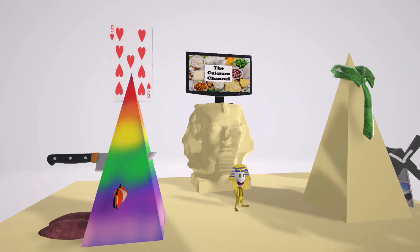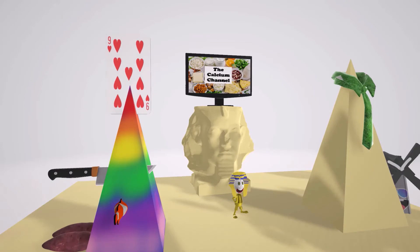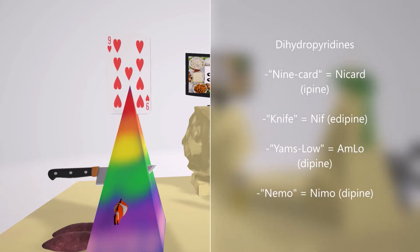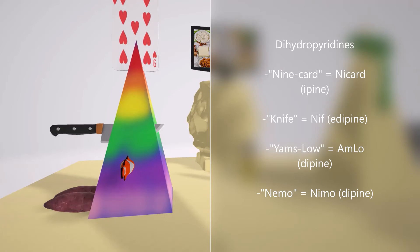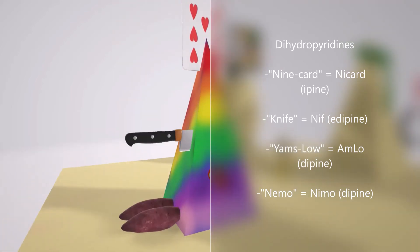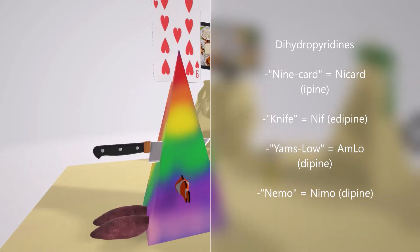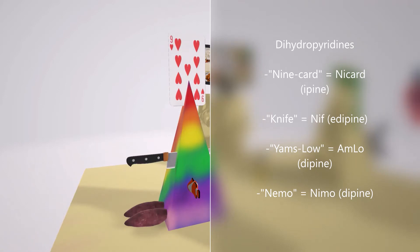Which drugs are included in the dihydropyridine calcium channel blockers? They've taken a nine card and stuck it on top of the pyramid — nine card, or 'nycard,' for nicardipine. We don't need to remember '-pine' because all the dihydropyridines end in '-pine.' A knife stuck through the pyramid for nifedipine. Random yams placed very low — the 'ams that are low' for amlodipine. And Nemo stuck in the pyramid for nimodipine. So the dihydropyridines include nicardipine, nifedipine, amlodipine, and nimodipine.